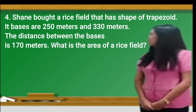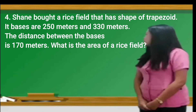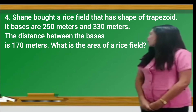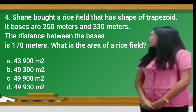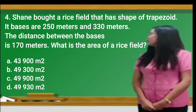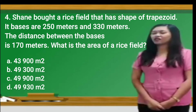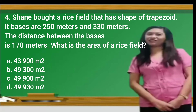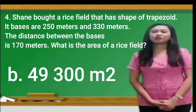Number 4: Shane bought a rice field that has the shape of a trapezoid. Its bases are 250 meters and 330 meters. The distance between the bases is 170 meters. What is the area of the rice field? A. 43,900 sq m. B. 49,300 sq m. C. 49,900 sq m. Or D. 49,300 sq m. The correct answer is B, 49,300 square meters.